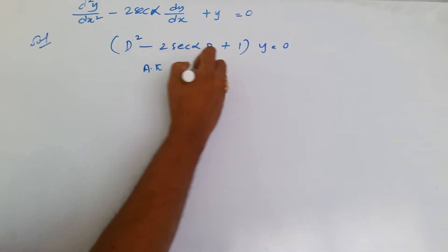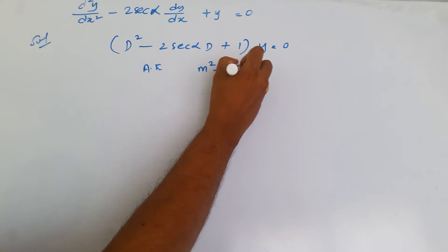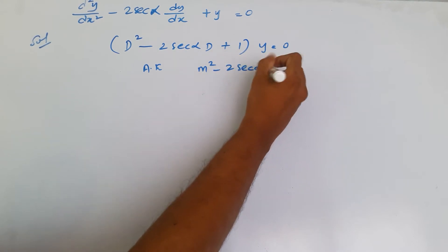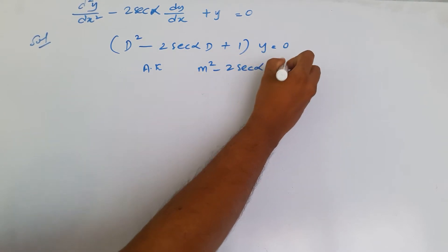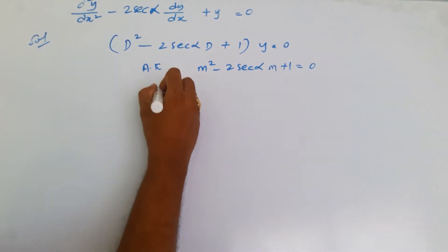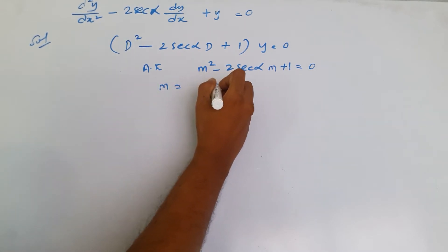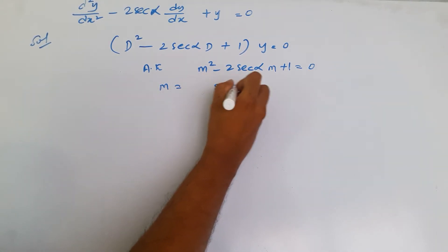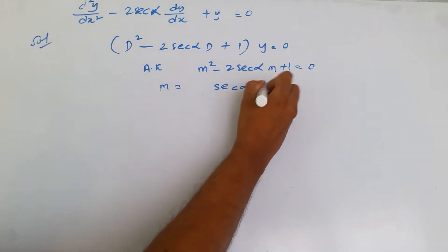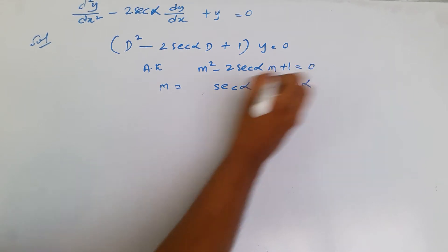The auxiliary equation corresponding to this is m² - 2·sec(α)·m + 1 = 0. The roots are sec(α) ± tan(α).